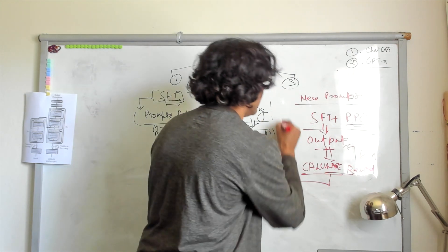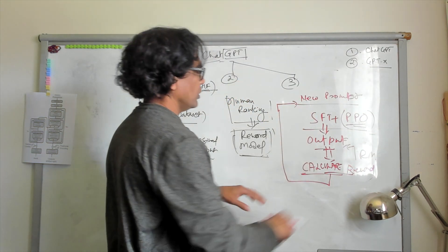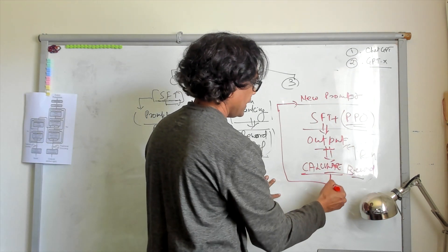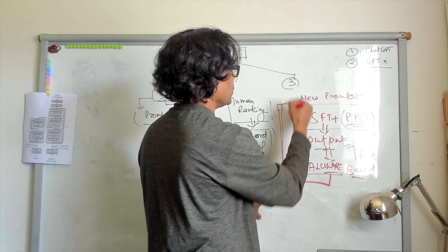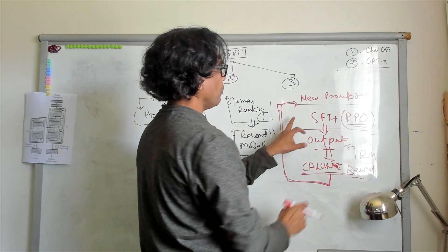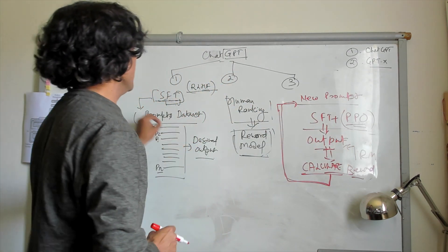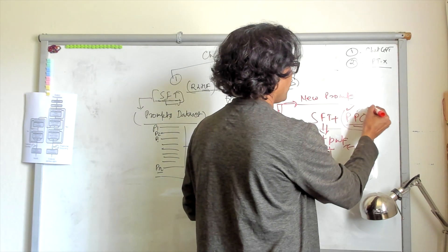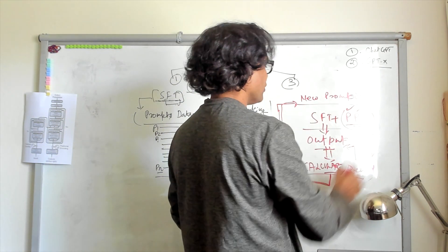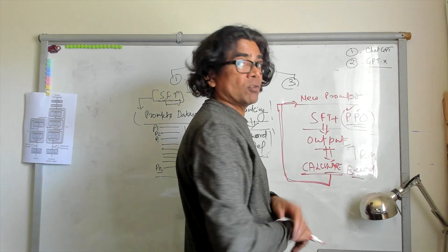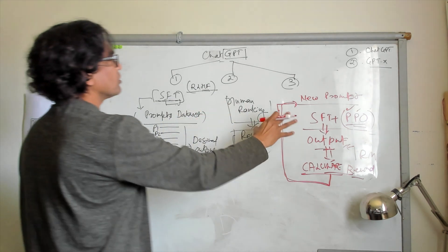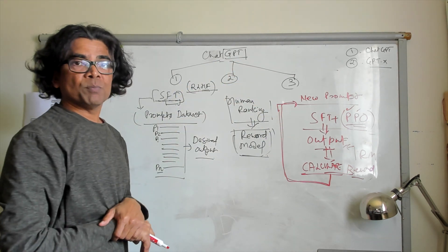And finally, this data has been sent back to the result which is coming out from the reward model and has been fed back into the process. And where the combination of the supervised fine-tuning plus the proximal policy optimization, the results are fine-tuned at higher degree. And this is how all combining these three steps, a ChatGPT model has been trained.